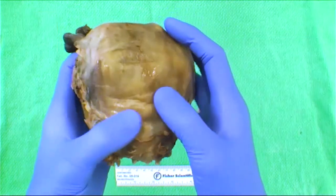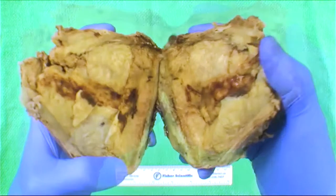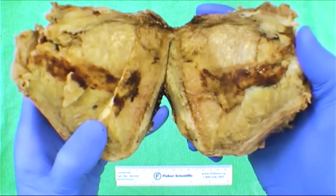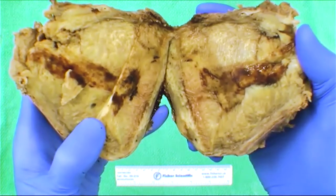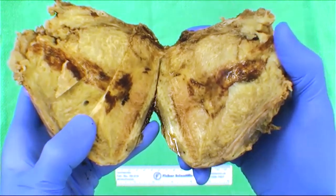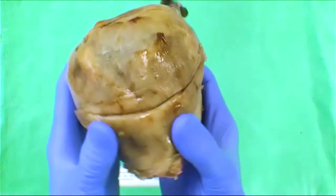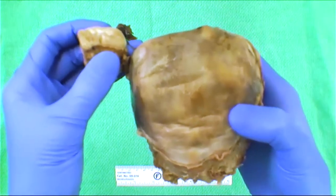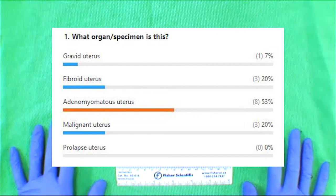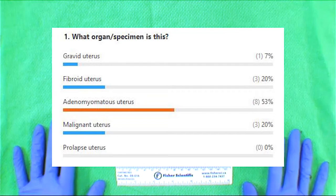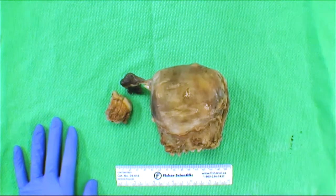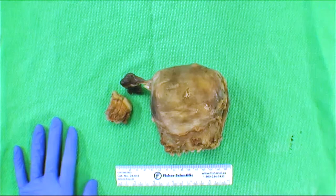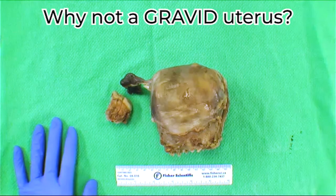Someone said to show the inside again, but we'll end the poll there — it's a good spread. As you can see, most people chose correctly. This is a nice example of an adenomyomatous uterus. We can go through the different options — can someone tell me why this likely isn't a gravid uterus?